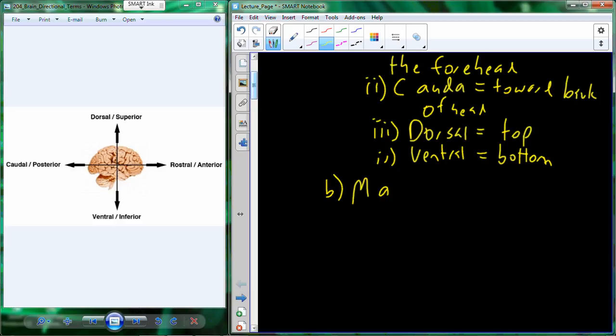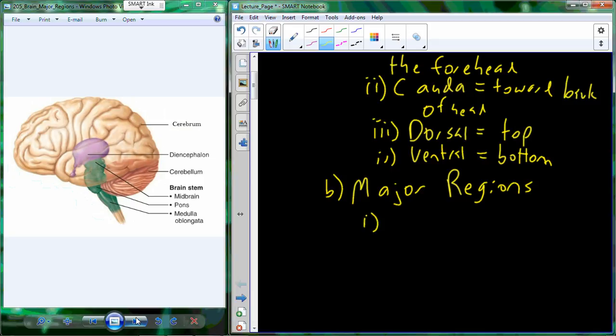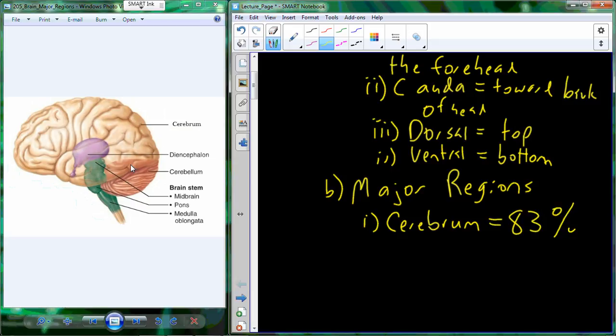Now the brain has several major components and we're going to refer to those as the major regions. So this is a sagittal view of the brain. The cerebrum is the part of the brain that you can see here in this figure, and this is the largest portion of the brain and it counts for about 83% of total weight.